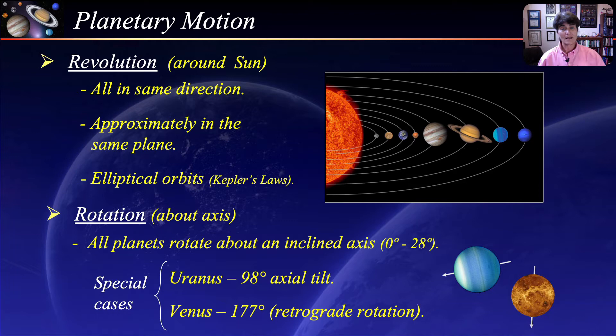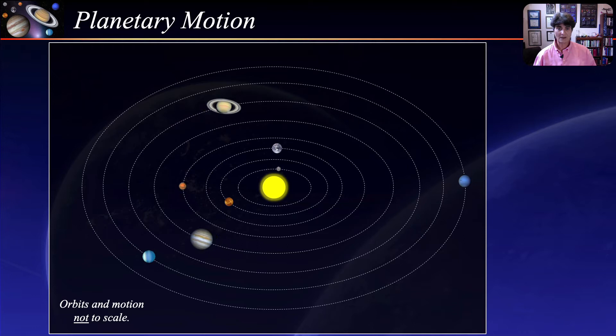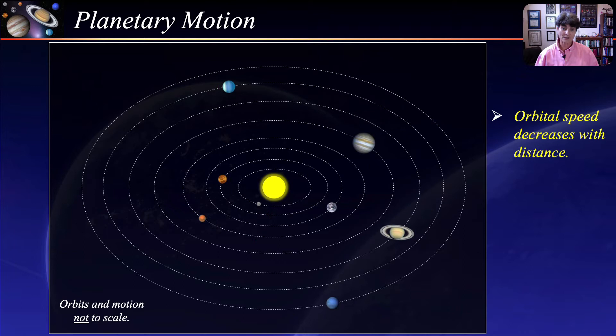Here are the planets and their orbits. All planets revolve around the sun in the same direction and approximately on the same plane. As the planets orbit the sun, the closer the planet is to the sun, the faster its orbital speed. This is due to the decreasing force of gravity as the distance from the sun increases.